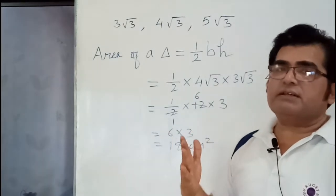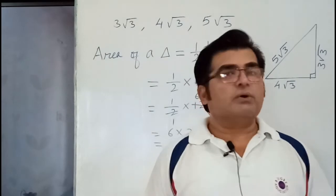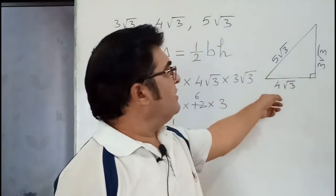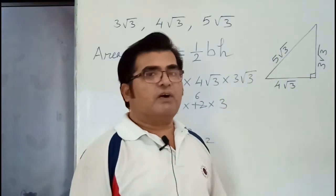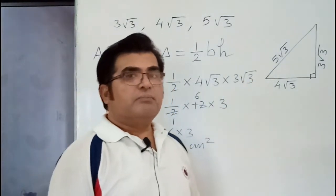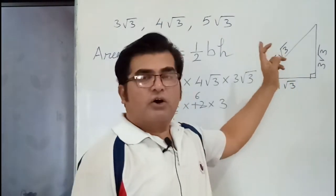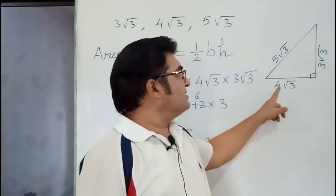Because only it is given that they are the three sides of a right angle triangle. So I draw a right angle triangle and I have written 5√3 for the hypotenuse. Why I have written 5√3 for the hypotenuse? Because hypotenuse is the longest side of a right angle triangle. So this is 4√3.